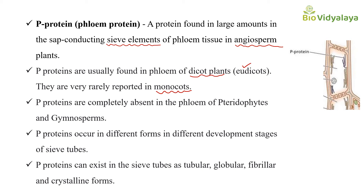P protein occurs in different forms at different developmental stages of the sieve element. P protein can exist in the sieve element as tubular, globular, fibrillar, and crystalline forms. So we can see these different forms of P protein in the sieve elements of angiosperms, which are commonly present in dicot plants and rarely in monocots, and completely absent in pteridophytes and gymnosperms.